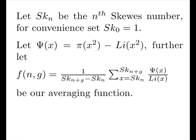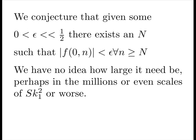Let sk_n be the nth skews number. For convenience, set sk_0 equal to 1. That is, we'll say there's a skews crossing at 1 by construction. So here we make an error function for the primes at the square and now we build an averaging function and we're going to measure around skews numbers. So n and g are integral values. n is the starting skews number and g is the delta skews numbers away. We conjecture that given any epsilon positive and much less than a half, there exists an n capital such that the absolute value of our averaging function is less than epsilon for every n greater than this capital N.